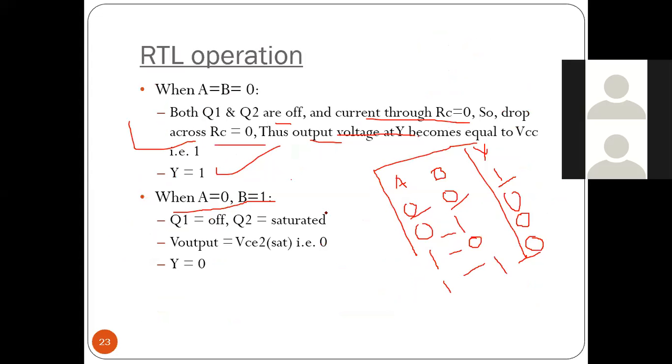So it is a NOR gate of RTL. You can see whenever A is 0, B is 1, Q1 is off but Q2 is saturation, so VCC 2 is 0, so your output will be 0.